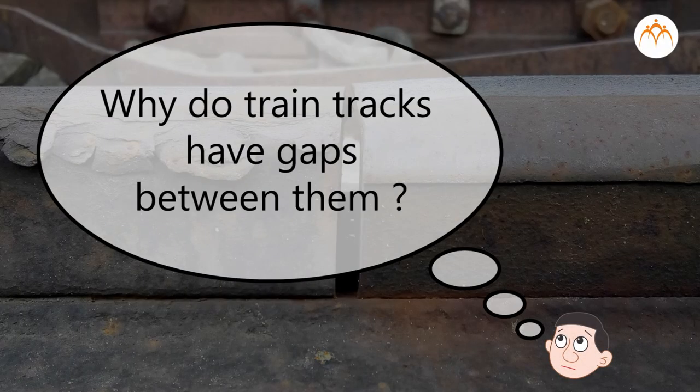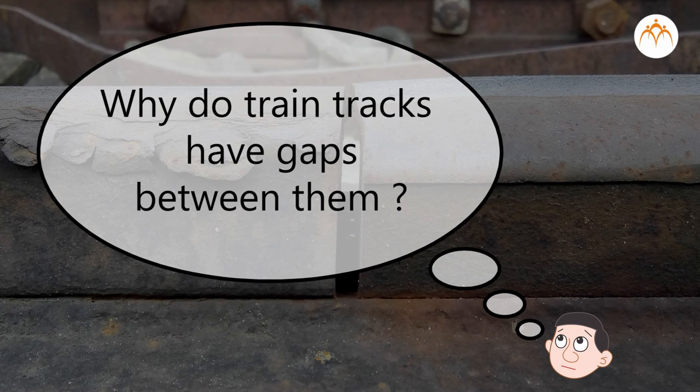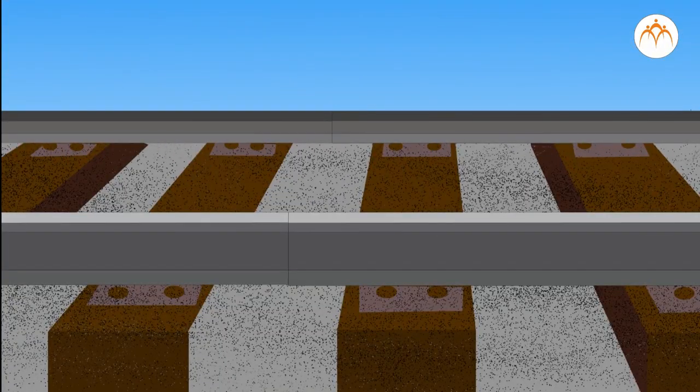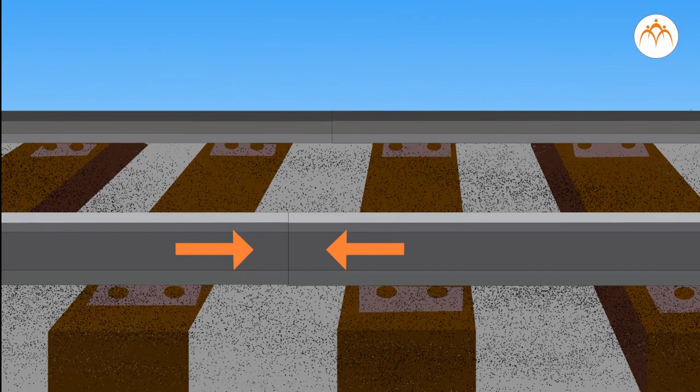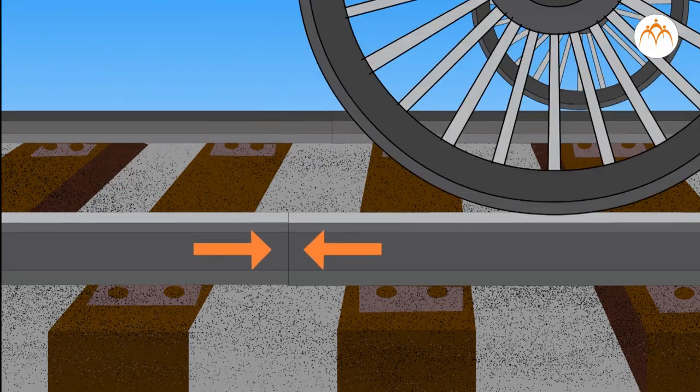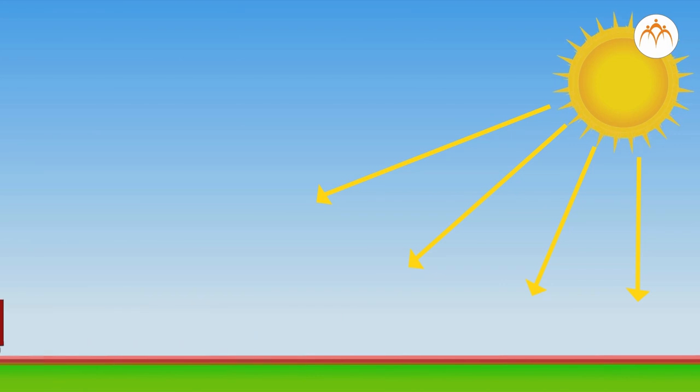Any idea why there are gaps between the rail tracks? If two railway tracks are laid together without any gap between them, they will push against each other because they expand on heating.